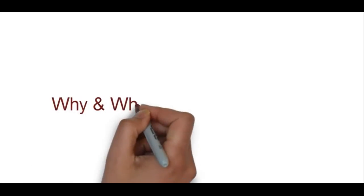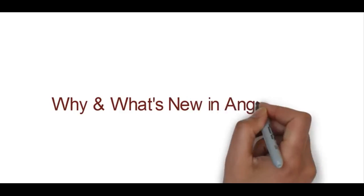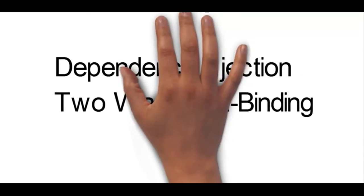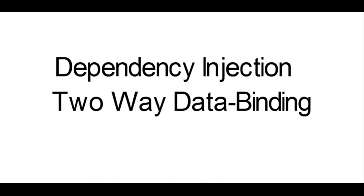Why and what's new in AngularJS? The first feature is dependency injection — something AngularJS really did well. If you're new to it, do not worry, we will discuss it in later videos. Second is two-way data binding, which is a speciality of AngularJS. It means if you change something in the model it will get reflected in the view, and if you change something in the view it will get reflected in the model.